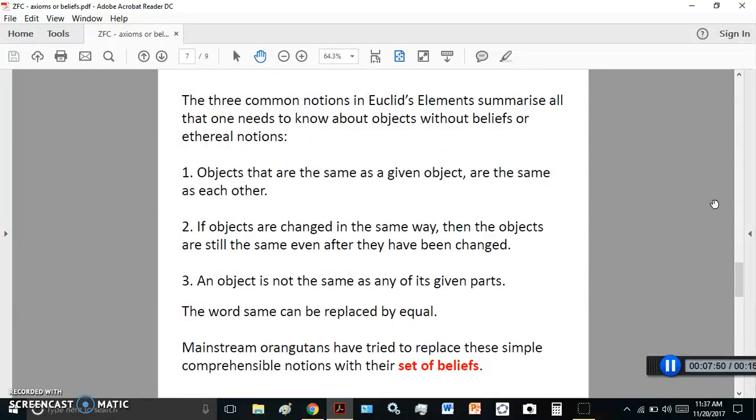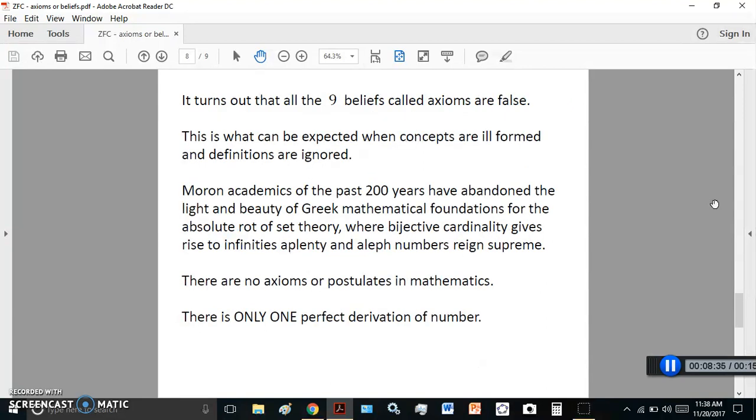The rot of set theory was meant as a replacement for the sound mathematics of the ancient Greeks. Now, there are actually four common notions in Euclid's Elements which I've summarized, and they are all one needs to know about objects without beliefs or any other intriguing, weird notions. And here they are. One, objects that are the same as a given object are the same as each other. If objects are changed in the same way, then the objects are still the same even after they have been changed. An object is not the same as any of its given parts. Now, in any of those three, the word object or the word same can be replaced by equal. So, mainstream orangutans have tried to replace these simple comprehensible notions with their set of beliefs. It turns out that all the nine beliefs are false.